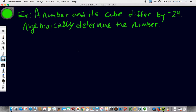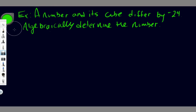Hey guys, Mr. Burns here. I'm bringing you another math video, this one on a polynomial word problem involving cubics. This is a question I gave on my test and it wasn't particularly done well. It's a tricky question, but not so hard that I wouldn't expect it to be done well. The question says: a number and its cube differ by negative 24. Algebraically determine the number.